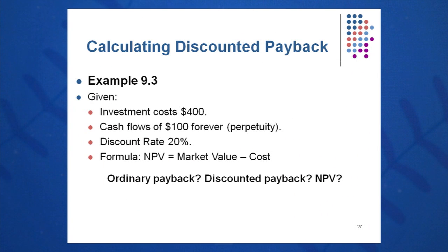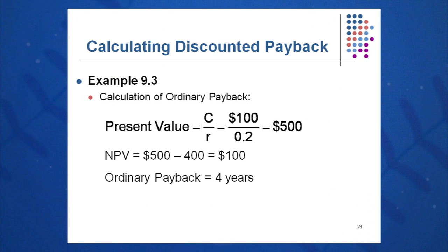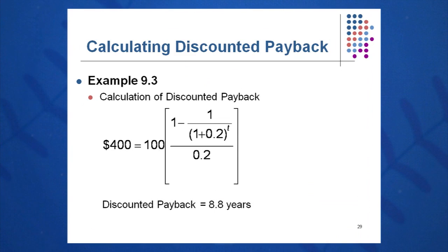Here's a second example: an investment costs $400 and pays $100 each year in perpetuity, with a discount rate of 20 percent. When is the CFO paid back on an ordinary basis and on a discounted basis? Ordinary payback is simply four years. For discounted payback, the present value of the cash flows is C over R, which equals $500, and we calculate the discounted payback to be 8.8 years.